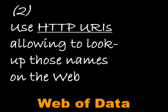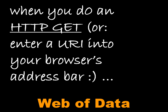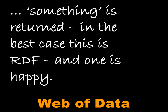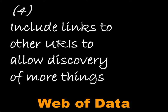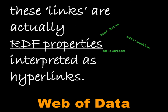Second, use HTTP URIs, allowing you to look up those names on the web. When you do an HTTP GET, or put simply, enter a URI into your browser's address bar, something is returned. In the best case this is RDF, and one is happy. When someone looks up a URI, provide useful information. Include links to other URIs to allow discovery of more things. These links are actually RDF properties, such as FOAF, DC Subject, RDF type, and they are interpreted as hyperlinks.